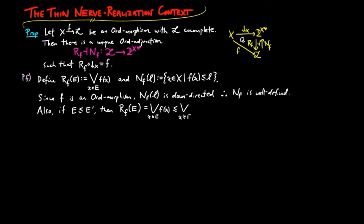This is the definition of Rf on E prime. Therefore Rf is also well defined. Moreover, Rf on E is less than or equal to l if and only if E is less than or equal to Nf on l for each down-directed set E and l in L.